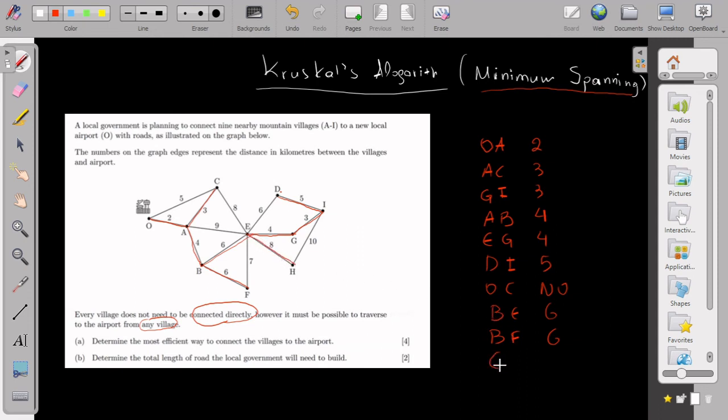And that's for question A. Now for question B, it asks me to determine the total length of the road the local government will need to build.